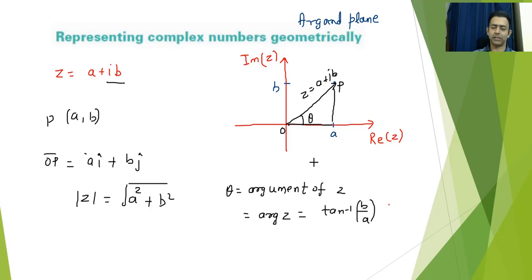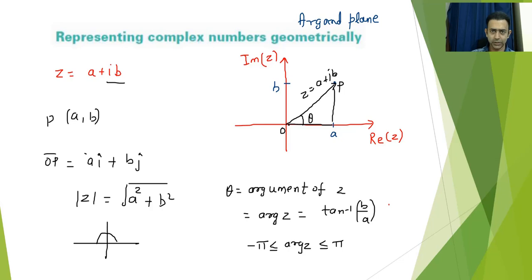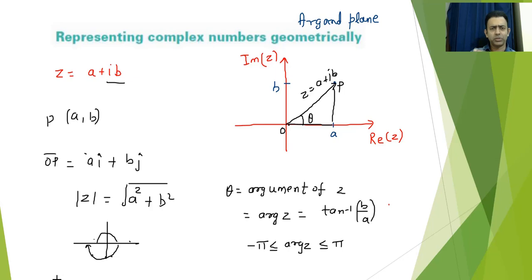The argument of z, which is tan⁻¹(b/a), will always lie between -π and +π. You will measure the angle either anti-clockwise between 0 to 180 degrees, or clockwise from 0 to -180 degrees in the negative direction. We cannot write the argument as 190 or 270 degrees. If θ occurs in the third or fourth quadrant, we measure the angle clockwise and write it with a negative sign.